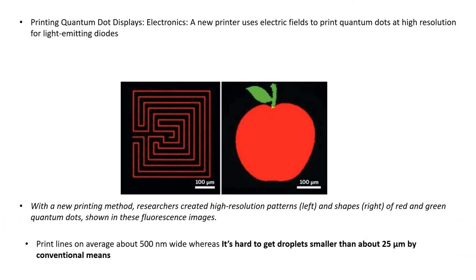Another application is printing quantum dot displays and electronics. A new printer uses electrical fields to print quantum dots at high resolution for light emitting diodes. With a new printing method, researchers created high resolution patterns shown in the left hand side of the picture and shapes in the right hand side of the picture of red and green quantum dots shown in these fluorescent images. Print lines on average are about 500 nanometer wide, whereas it's hard to get droplets smaller than about 25 micrometer by conventional means.